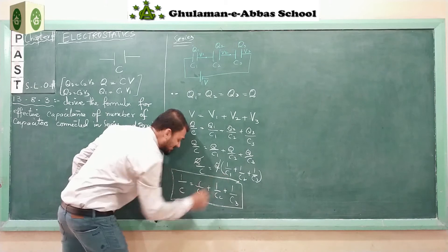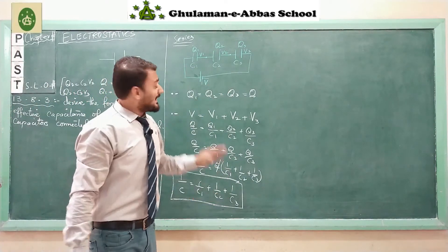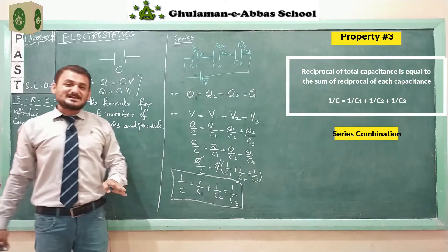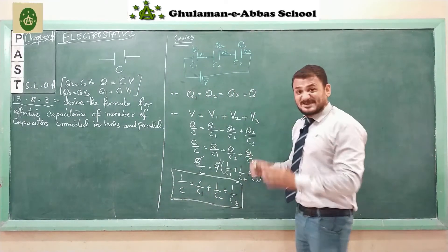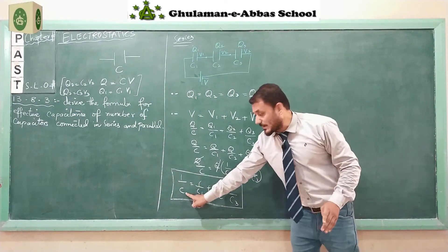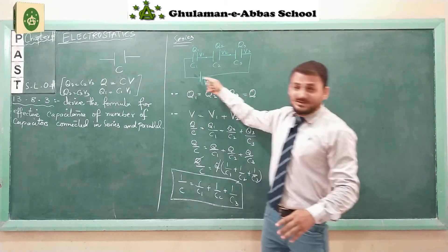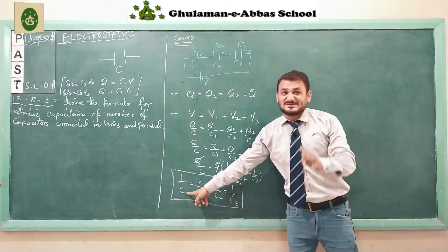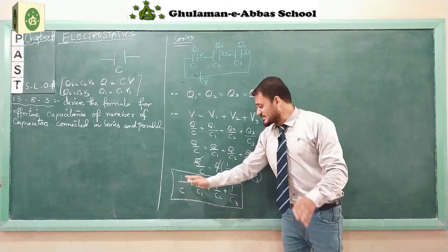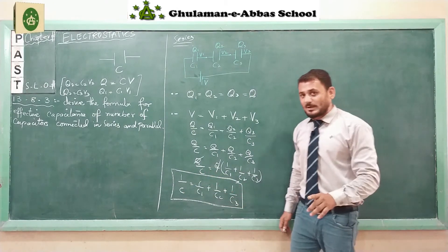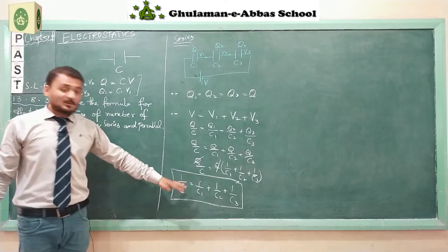Finally, we have 1 over C equals 1 over C1 plus 1 over C2 plus 1 over C3. This is the expression for the total capacitance of a series circuit. The reciprocal of total capacitance C is equal to the sum of the reciprocals of each individual capacitor. If we need to find total capacitance in a series combination, we use this formula.